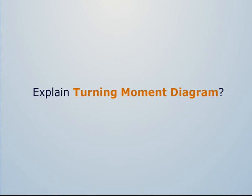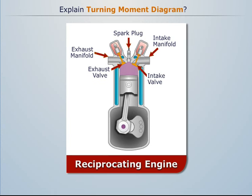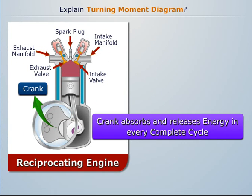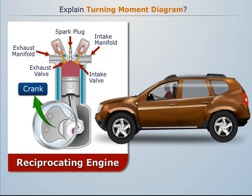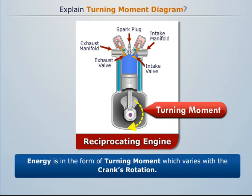To explain the turning moment diagram, we know that in a reciprocating engine, the crank absorbs and releases energy in every complete cycle, which is then used to run the machine. This energy is in the form of turning moment, which varies with the crank's rotation.